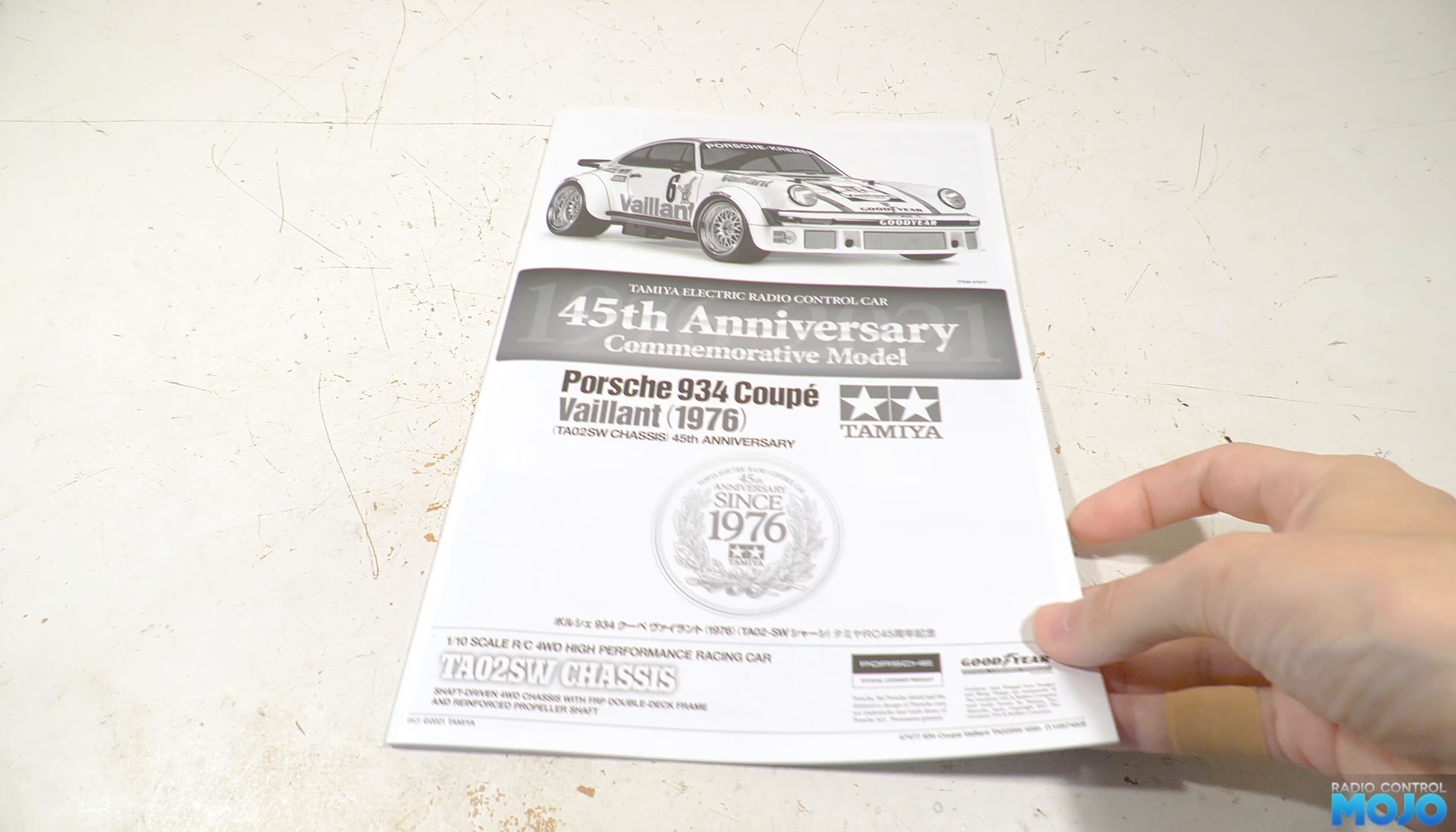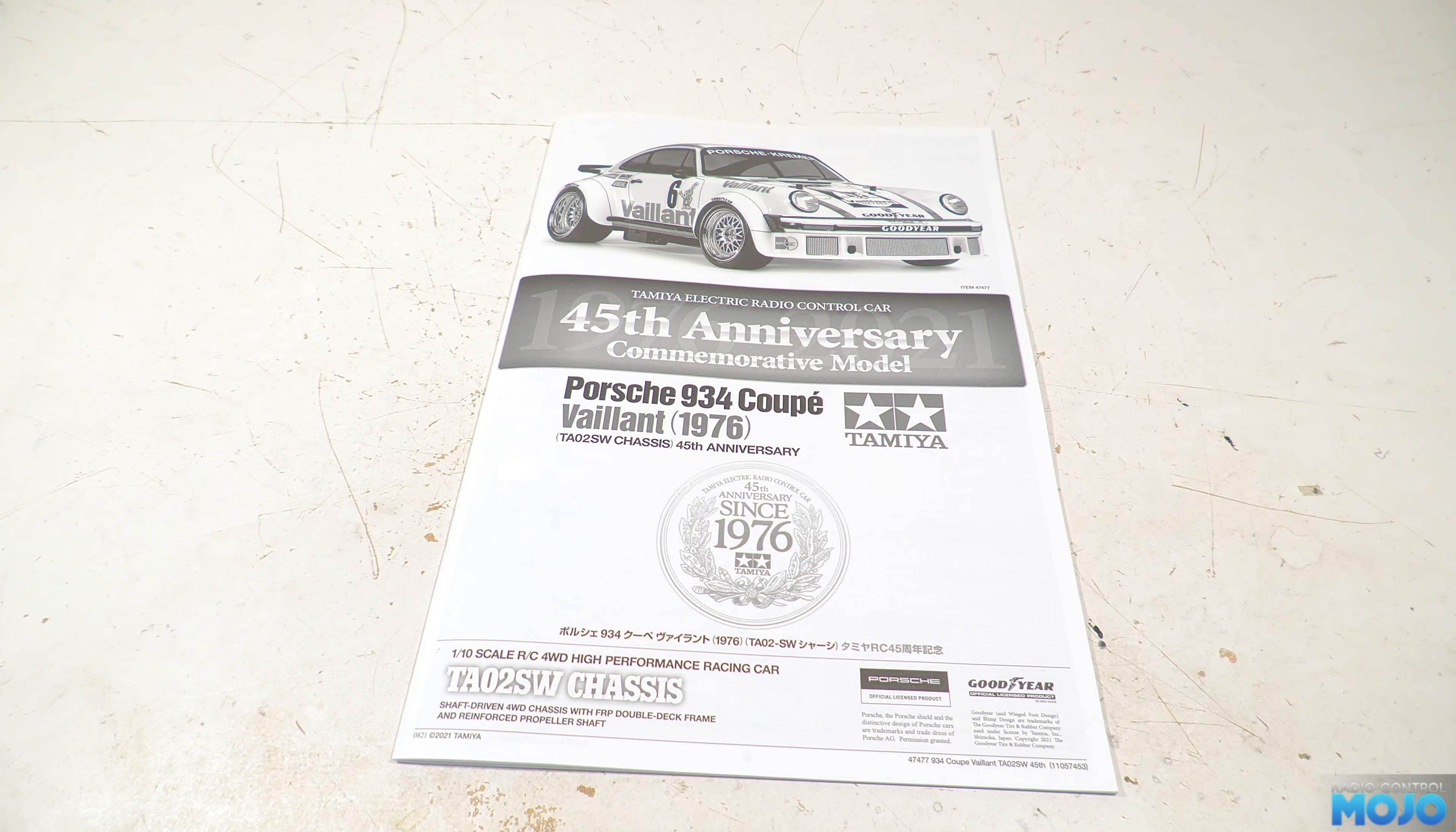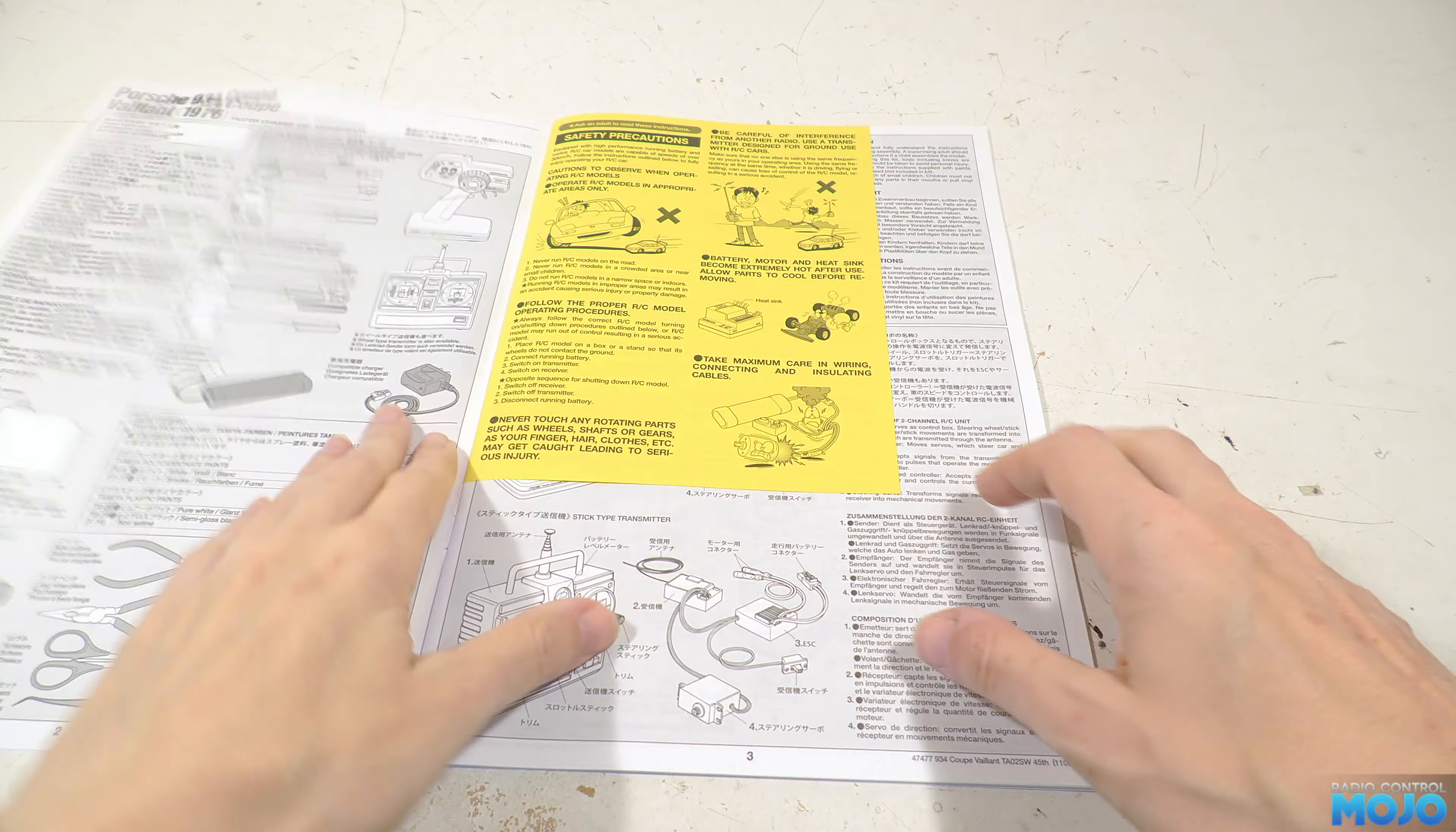Alright guys, welcome to RC Mojo! This week we're going to make a start on the Tamiya 45th anniversary Porsche. It's using the TA-02 SW chassis with some factory hop-ups, so it should be a good build.